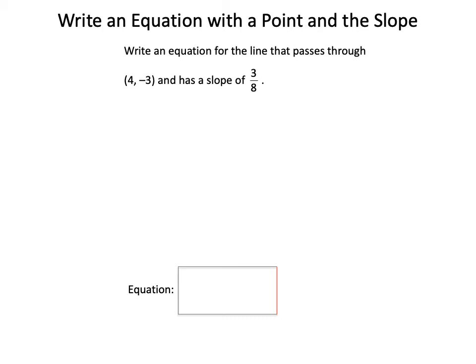In this video we're going to write an equation for a line given a point and a slope, but we're not going to use point-slope formula. We are going to use the slope-intercept formula, because a lot of times when people see the directive to write an equation, they think about slope-intercept.